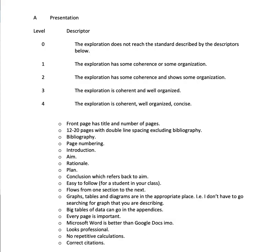Hi guys, in this video I'm going to go through the first criterion which is presentation and see how we can get four out of four for this criterion. To get four, it says the exploration is coherent, well organized, concise. I'm going to explain what those three words mean as I go through these bullet points.